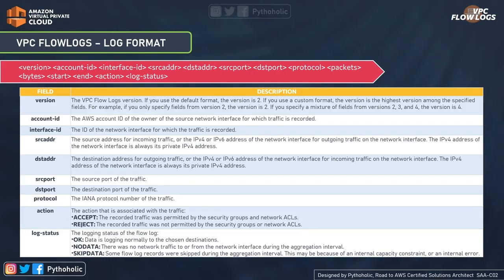The last field is log status — the status of the flow log. There are three statuses: OK means data is logging normally to the chosen destination with no problem. No data means there was no traffic to or from the network interface during the aggregation interval, indicating no network traffic was captured in that period. Skip data means some flow logs were skipped during the capture window or aggregation interval due to internal errors. These are all valid pieces of information you can get from VPC flow log formats.